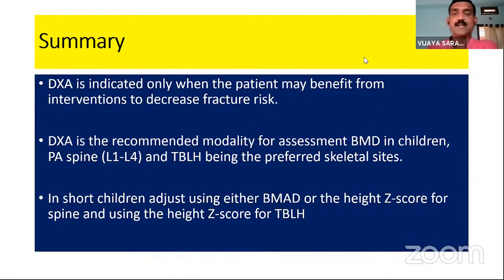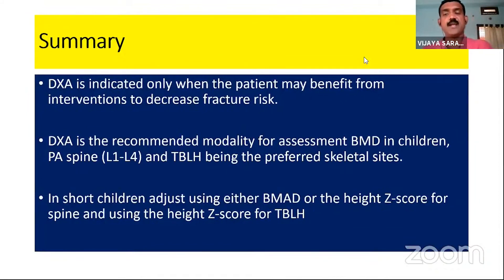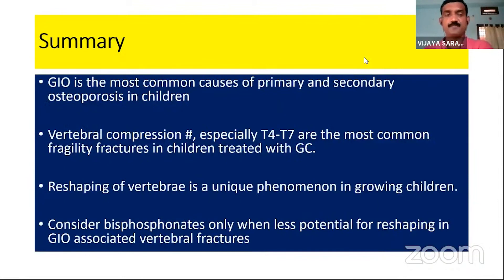In summary: DEXA is indicated in children only when the patient may benefit from interventions to decrease fracture risk. DEXA is the recommended modality; use lumbar spine or TBLH as the most preferred skeletal sites. In short children, do not diagnose osteopenia or osteoporosis by comparing to age-matched population alone — adjust for height Z-score to avoid over-diagnosis. Glucocorticoid-induced osteoporosis is the most common cause of secondary osteoporosis. Vertebral compression fractures, most common in T4 to T7, are the most common fragility fractures in children treated with glucocorticoids. Vertebral reshaping is a unique phenomenon in growing children; consider bisphosphonates in GIO only when less potential for reshaping is observed.